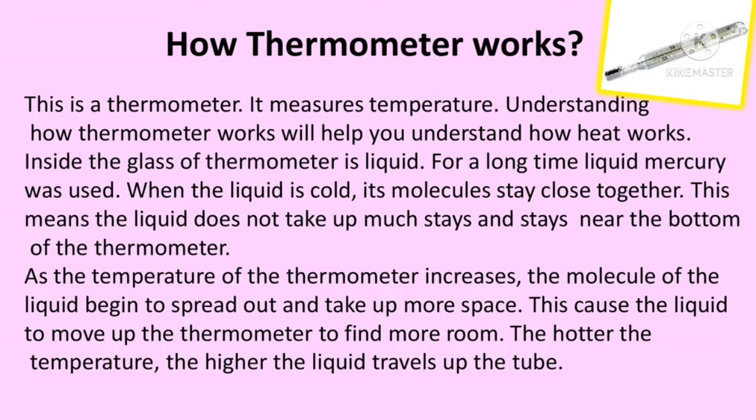Let's discuss how a thermometer works. A thermometer measures temperature. Understanding how a thermometer works will help you understand how heat works. Inside the glass of a thermometer is liquid — for a long time, liquid mercury was used. When the liquid is cold, its molecules stay close together, meaning the liquid does not take up much space and stays near the bottom of the thermometer. As the temperature of the thermometer increases, the molecules begin to spread out.